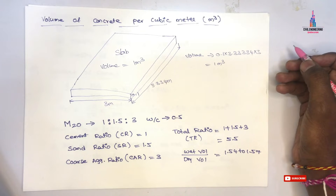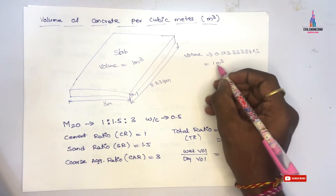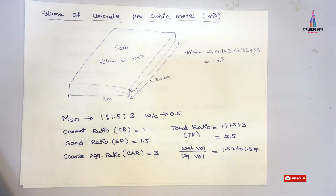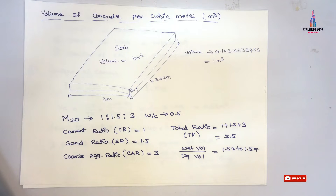The total volume of the slab is approximately equal to 1 cubic meter. In this video I will explain the concept and calculation related to the amount of cement required, the amount of sand required, and the amount of coarse aggregate required for casting this slab, which has a 1 cubic meter volume.